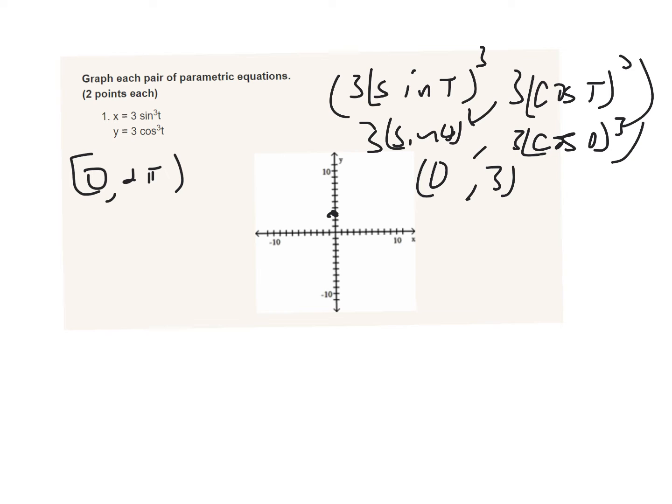Why don't we try pi over two? That's always a nice number to try. So we tried zero, we got the x, we got the y. Now I'm going to try pi over two. So the sine of pi over two is one, raised to the third power is one, and then times three is three, so x is three.